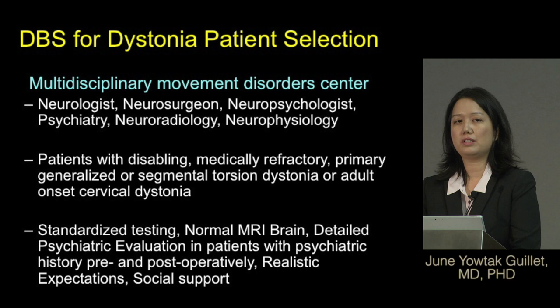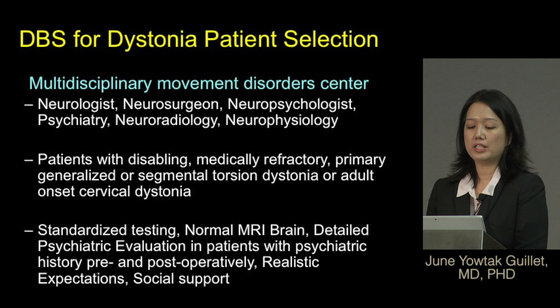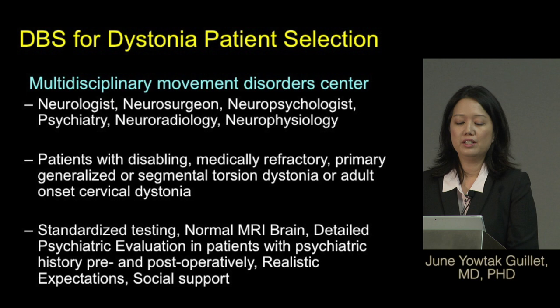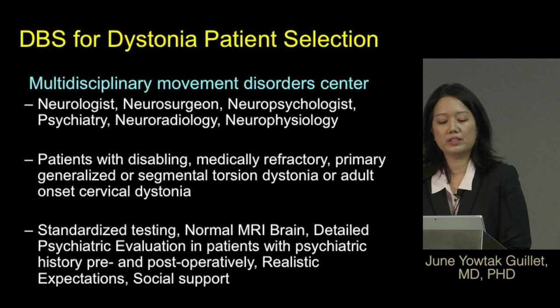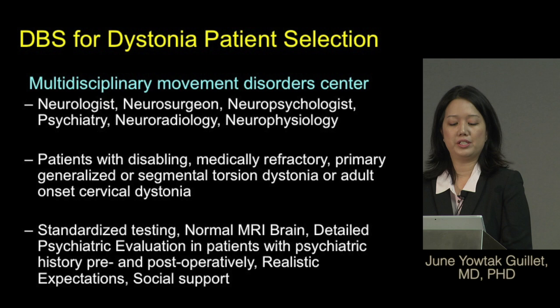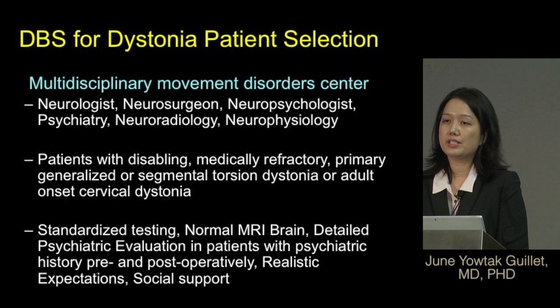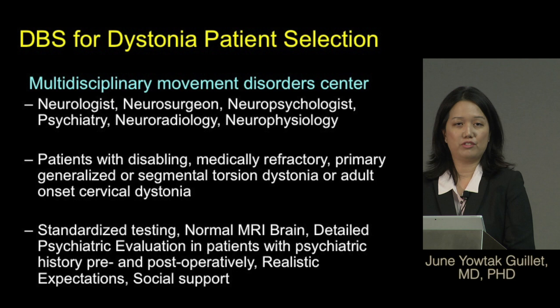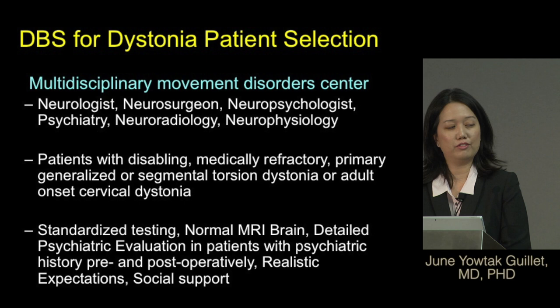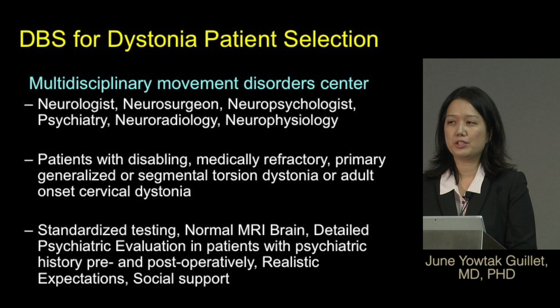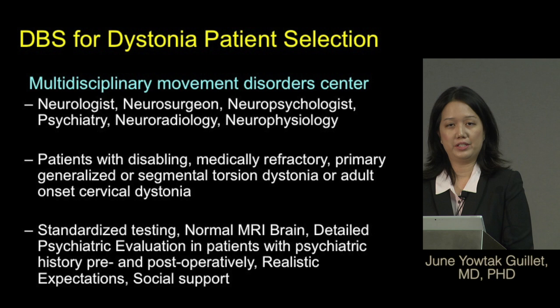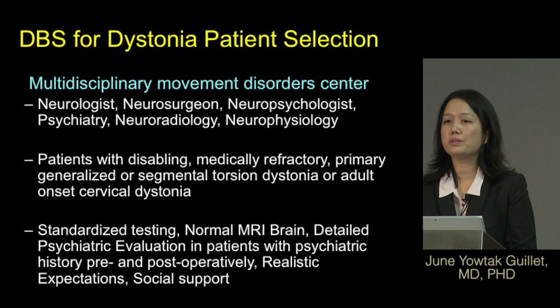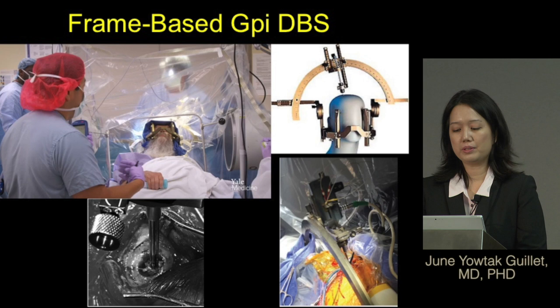For patients with dystonia, candidate selection involves referral to a multidisciplinary movement disorder center that includes neurologists, neurosurgeons, neuropsychologists, and psychiatry. Patients who undergo DBS typically have disabling, medically refractory primary generalized or segmental torsion dystonia, or adult-onset cervical dystonia. They undergo rigorous testing, normal MRI imaging, psychiatric evaluation to rule out comorbidities, have realistic expectations set, and are ensured to have a good social support system.